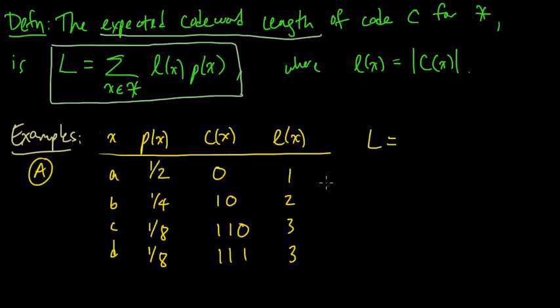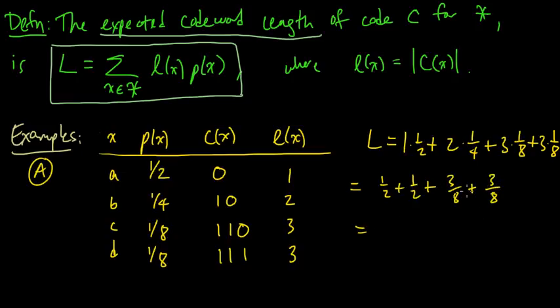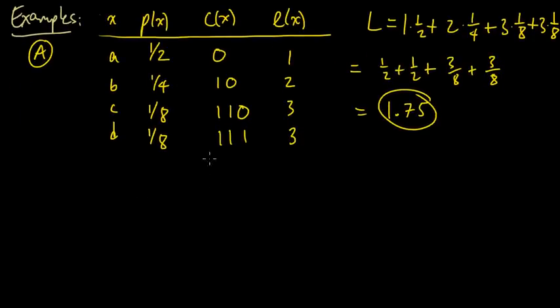And now let's compute the expected codeword length of this code, or the expected length. So plugging into the definition here, we have one times one half plus two times one quarter plus three times one eighth plus three times one eighth. So we get a half plus a half plus three eighths plus three eighths. And so we get one, six eighths is three quarters, so that's 1.75. So that's just a little example to compute the expected codeword length for that one, not too shabby, 1.75.